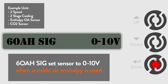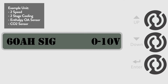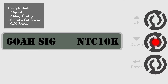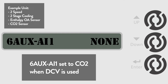Once we get to the run state section, we will set up the humidity setpoint. The default setting for CO2 is none, meaning the controller assumes that a CO2 sensor is not being used. Go to the 6 AUX AI1 menu and change the default setting from none to CO2. This tells the controller that a CO2 sensor is now being used.